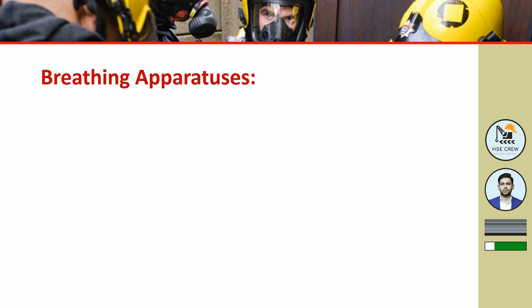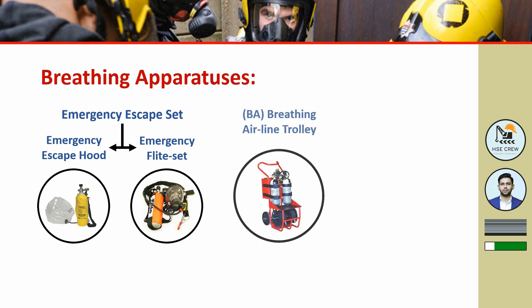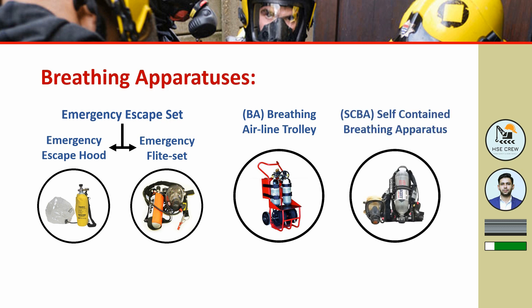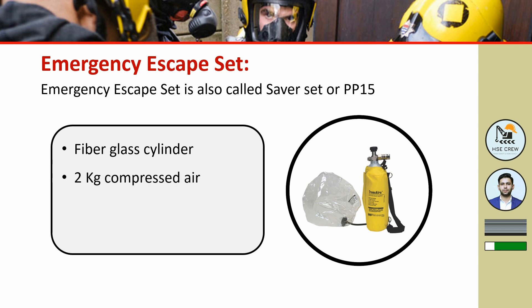All breathing apparatuses are designed on positive pressure. The types of breathing apparatus include: emergency escape set, emergency flight set, breathing airline trolley, and self-contained breathing apparatuses. Emergency escape sets are also called 'savered set' or PP-15 (personal protection 15). They have a fiberglass cylinder containing 2 kg of compressed air at 315 bar pressure, and provide 15 minutes of escape time. Emergency escape sets are used in oil and gas plants where there can be toxic gas release.